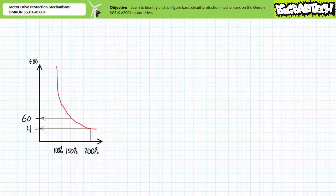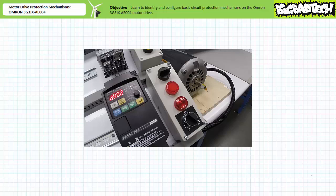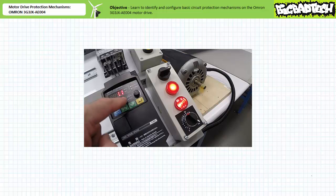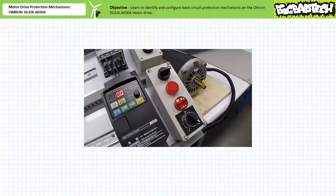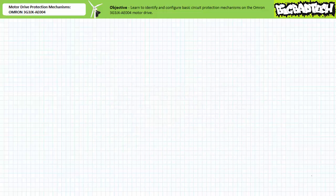Let's examine the overload behavior of the OMRON 3G3JX AE004 motor drive. First, we need to establish some baseline current data. With parameter D002, output current monitor being displayed, during acceleration current peaks around 1.7 amps. While in constant speed mode, the motor drive appears to be drawing 1.2 to 1.1 amps. During deceleration, current peaks at about 1.3 amps. Note that at no time did the drive fault due to an overload event, given the motor is properly sized and completely unloaded.